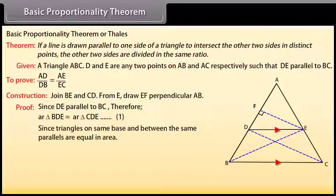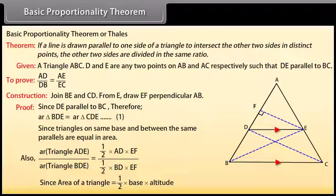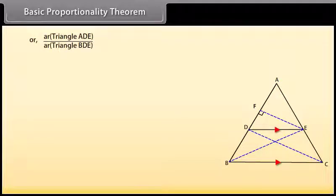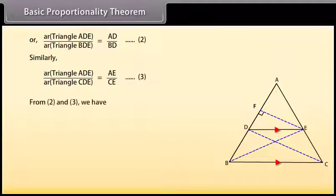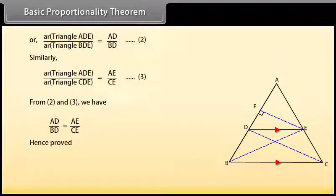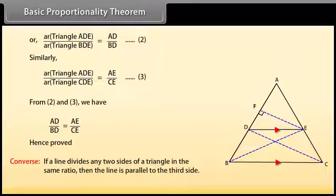Proof: since triangles on the same base and between the same parallels are equal in area, area of triangle ADE / area of triangle BDE = AD/BD — mark it as two. Similarly, area of triangle ADE / area of triangle CDE = AE/CE — mark it as three. From two and three we have AD/BD = AE/EC. Hence proved. The converse of this theorem is also true: if a line divides any two sides of a triangle in the same ratio, then the line is parallel to the third side.